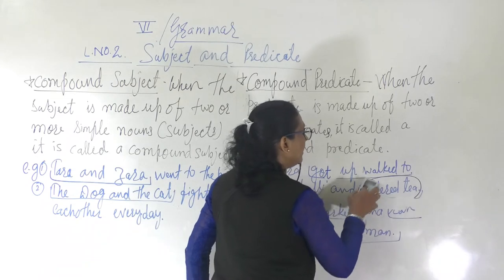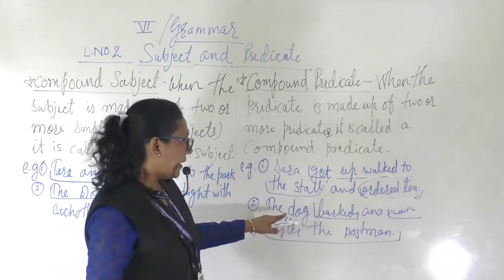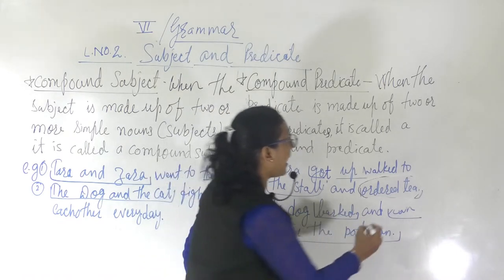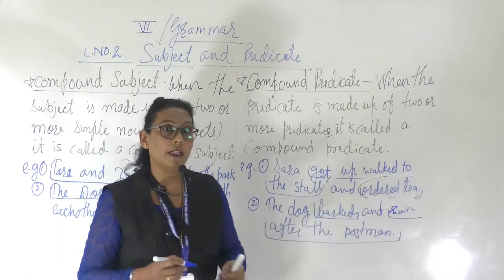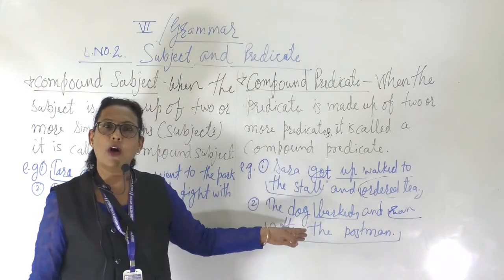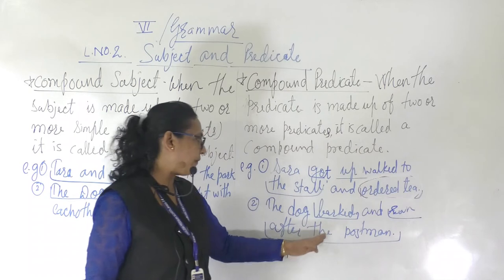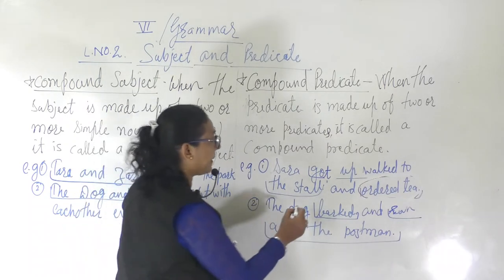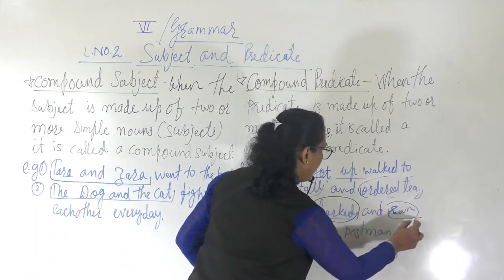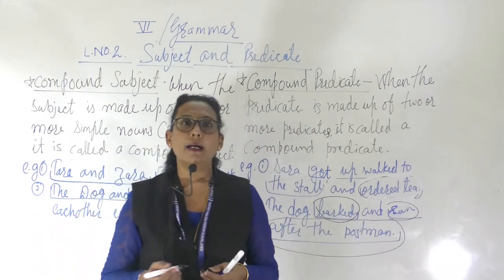Now let's see the second example. The dog barked and ran after the postman. The dog is the subject, and bark is one predicate. 'And ran after the postman' is another predicate. So this is called a compound predicate.